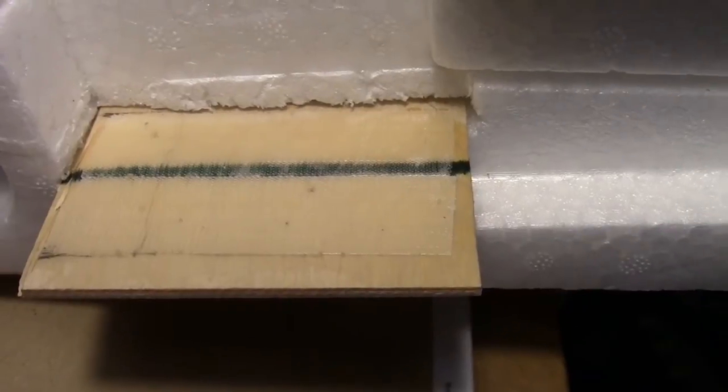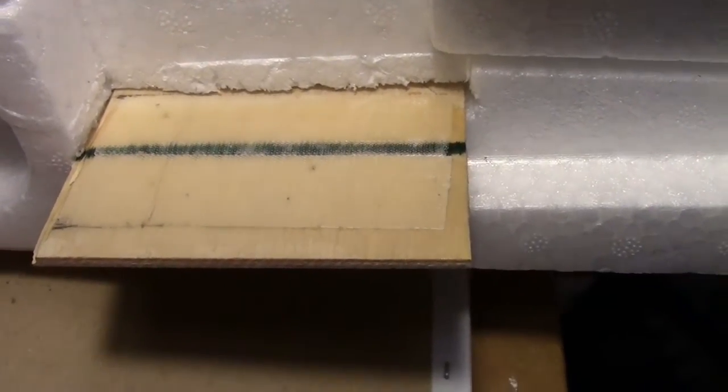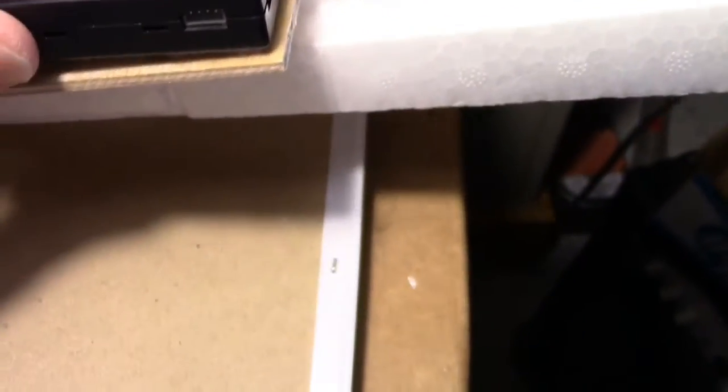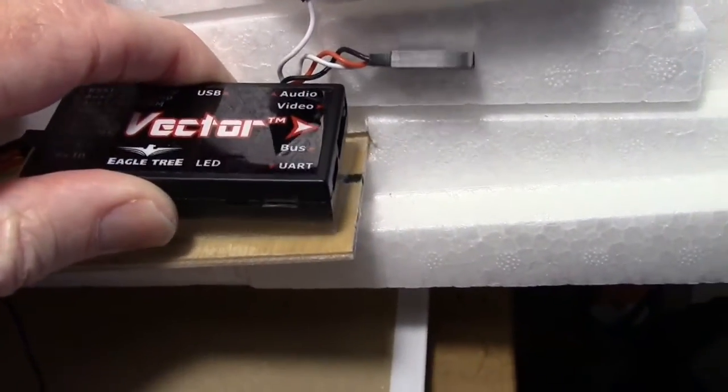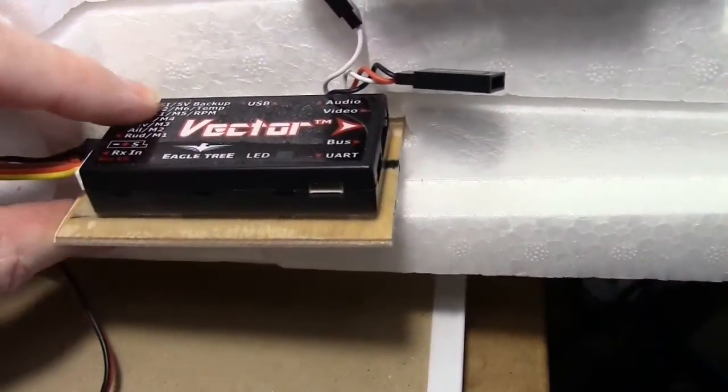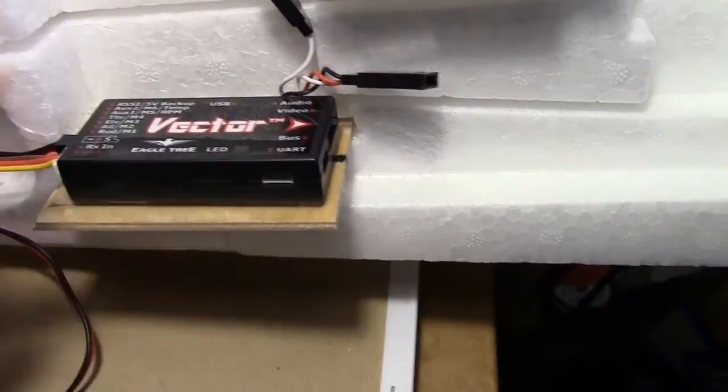The hook side of the velcro is now put on the plywood. Now let's go ahead and put the vector on there. And here goes the placement. Of course it'll be easy to remove later if we have to move it.